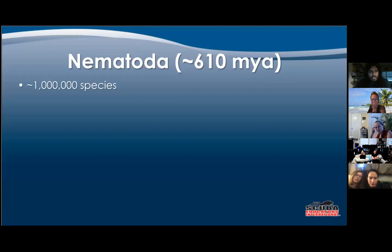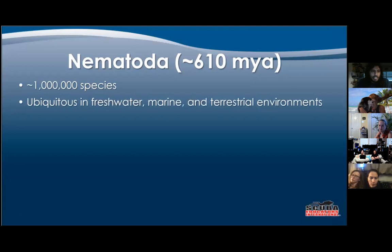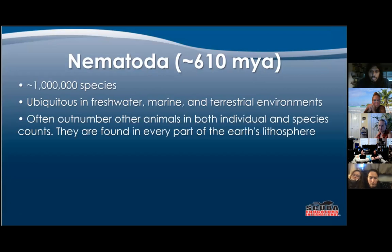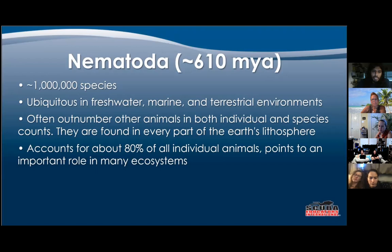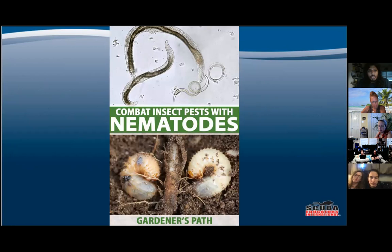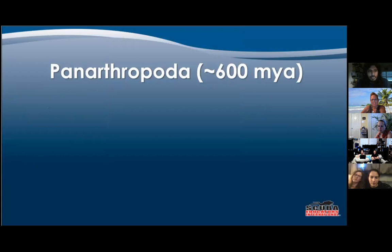Next we have Nematoda — over a million species. They're ubiquitous to fresh, marine, and terrestrial environments; you can find them throughout the lithosphere, which is basically Earth's crust. They're really important for nutrient recycling and soil overturn. They often outnumber any other animal in both individual and species count, accounting for 80% of all individual animals. They can also be used as pest control — you can get dehydrated nematodes, rehydrate them, put them in your lawn, and they'll help with insect problems.